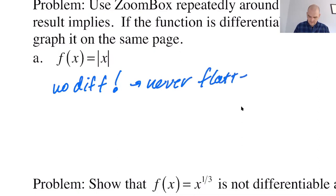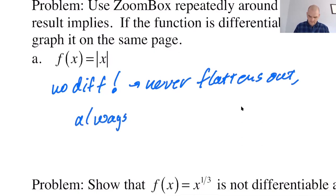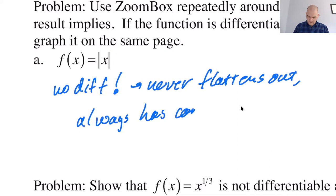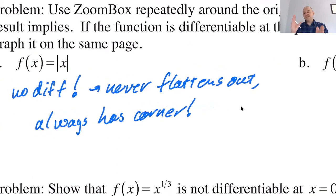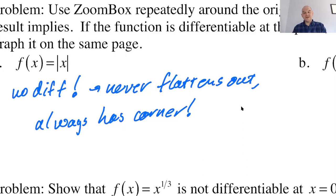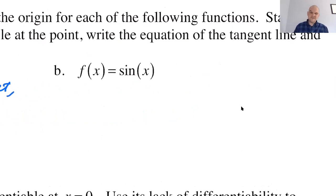We already knew it wasn't differentiable because in the last video we spent a lot of time showing that using the limit definition of the derivative. We computed the limit as X approaches 0 from the left and from the right of [f(x) - f(0)] / (x - 0). Those two limits were not equal, so the overall limit didn't exist — and since the limit is the definition of the derivative, the derivative doesn't exist.